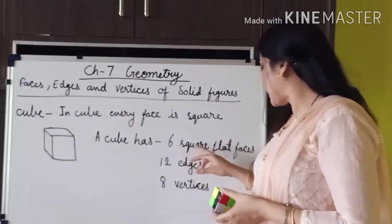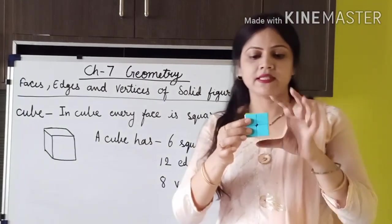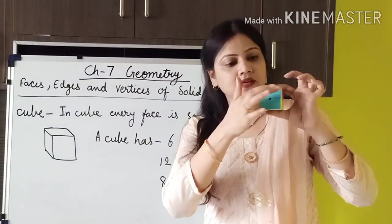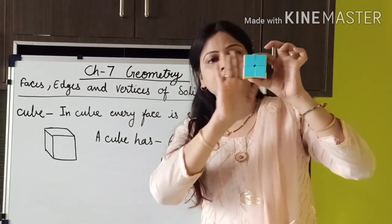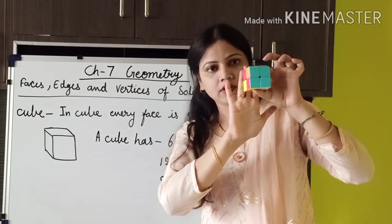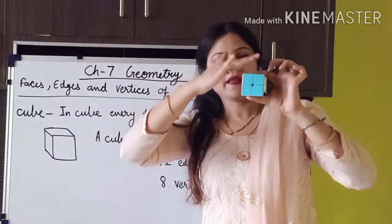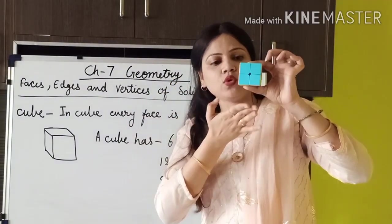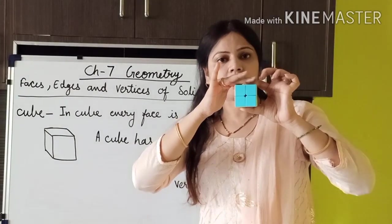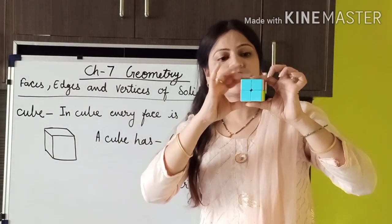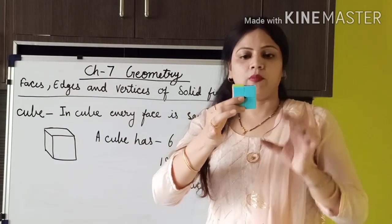A cube has six square flat faces. Four sides, one on the bottom, and one on the top — you can see these are the six faces of this cube.